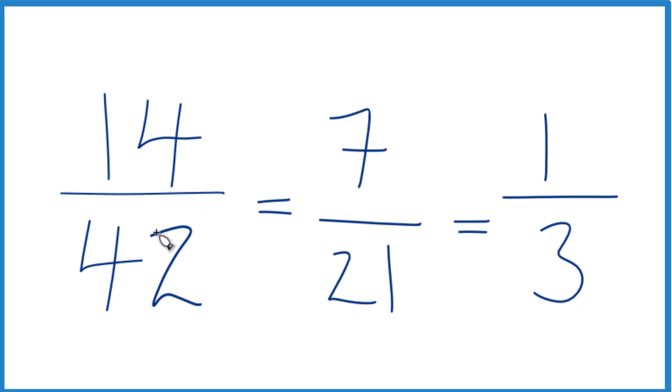So the fraction 14/42 equals 7 over 21, or in simplest terms, 1 over 3.